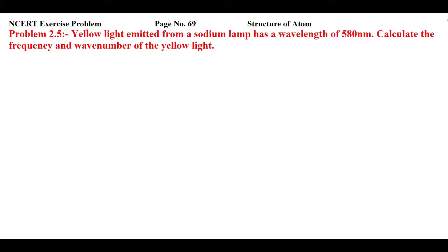This is NCERT exercise problem 2.5 from page number 69 of Structure of Atom. Yellow light emitted from a sodium lamp has a wavelength of 580 nanometers. Calculate the frequency and wave number of the yellow light. So you are given a wavelength of 580 nanometers and you have to find the frequency and wave number of this yellow light.